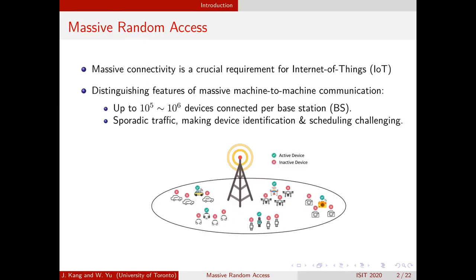We will examine a massive random access network, which is a crucial requirement for the Internet of Things. The distinguishing features of these networks include massive numbers of devices — on the order of 100,000 to 1 million devices per base station — and sporadic traffic, making both the identification of active devices and the subsequent scheduling of their data transmission challenging tasks.